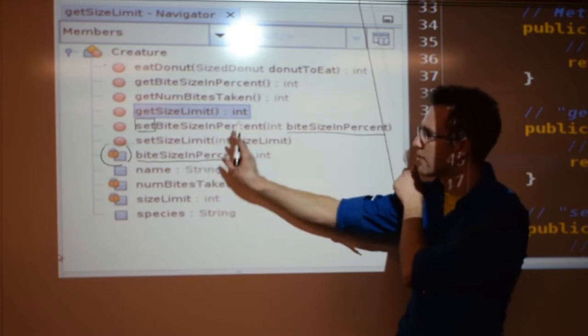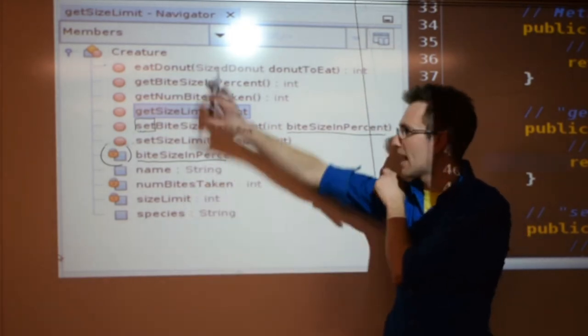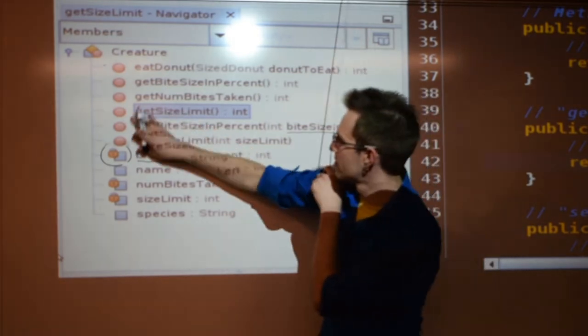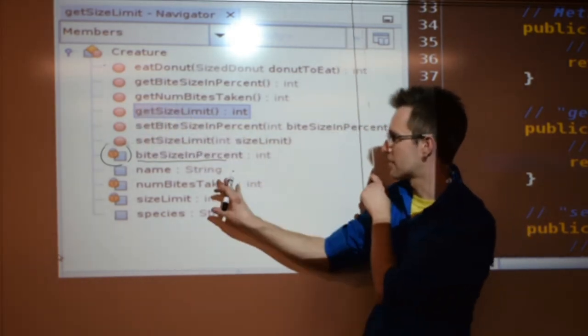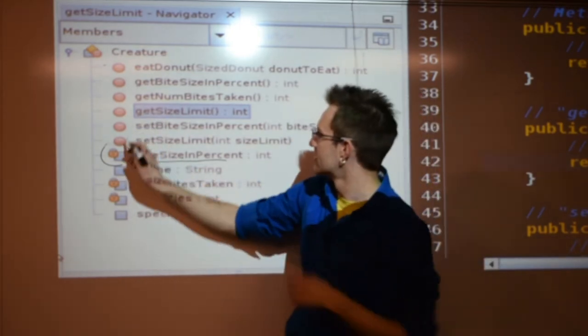So, we're going to code up some of these methods together because it will create an object that not only has data, but it can manage its own data in a smart way. Now, what if we want to see what the donut's bite size, or the creature's bite size is? We would call what method? Get. Get. What?